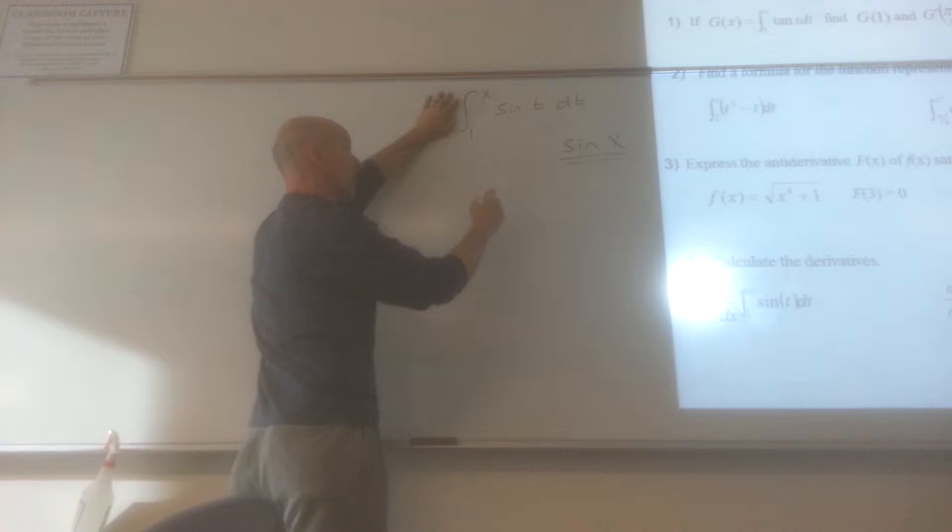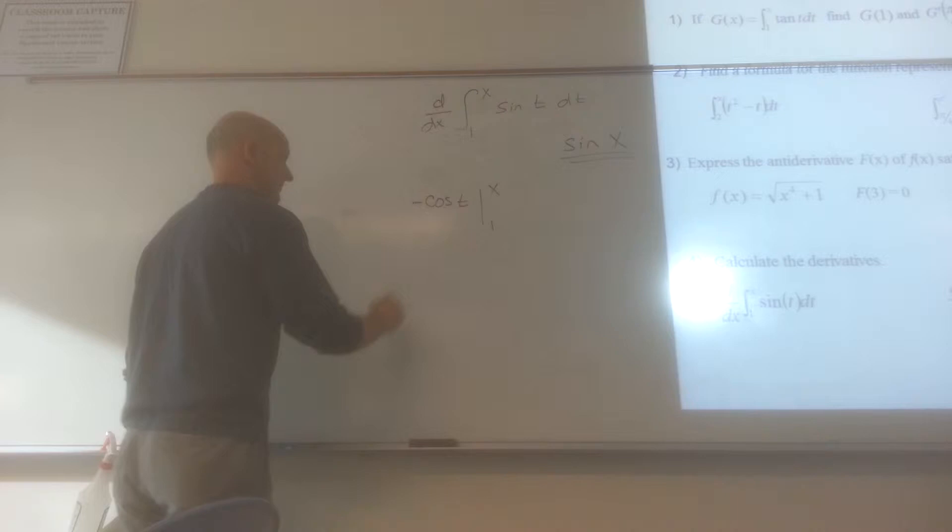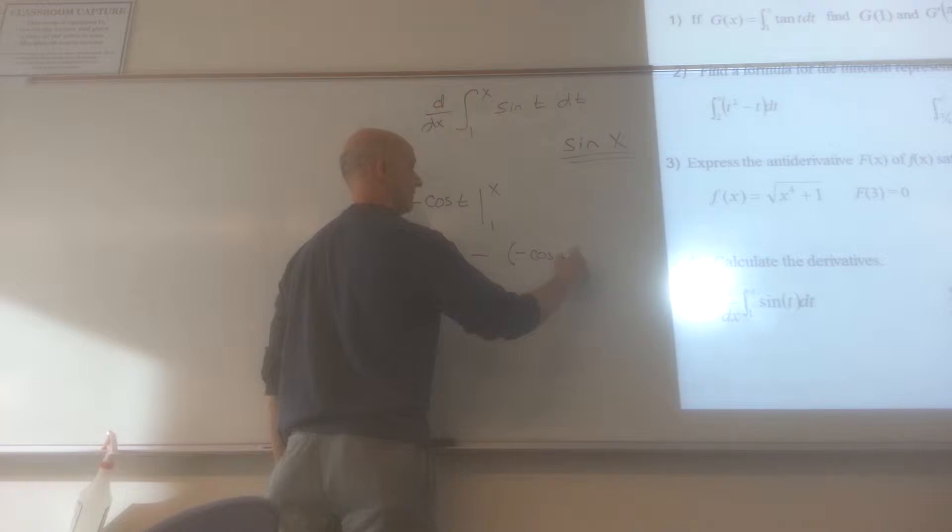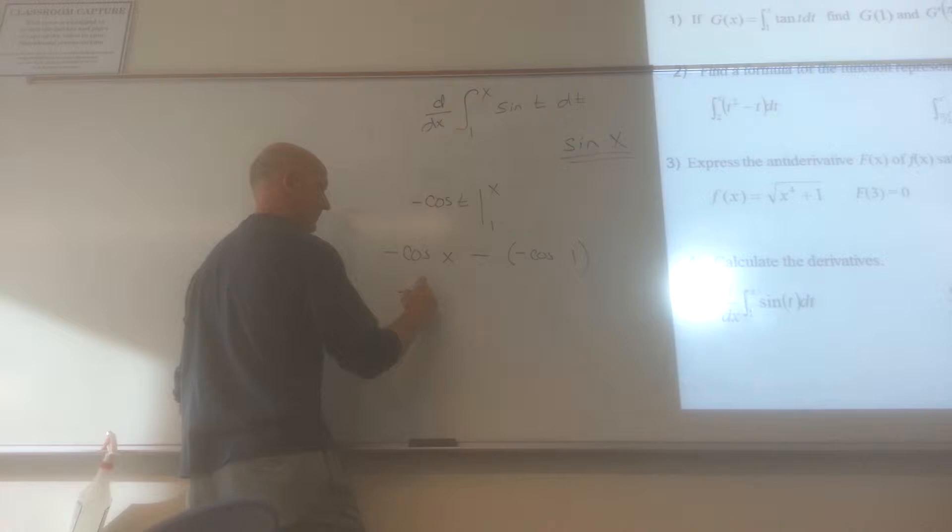So we have the negative cosine of t evaluated from 1 to x. So that would be the negative cosine of x minus the negative cosine of 1. Wouldn't that just be like plus the cosine of 1?